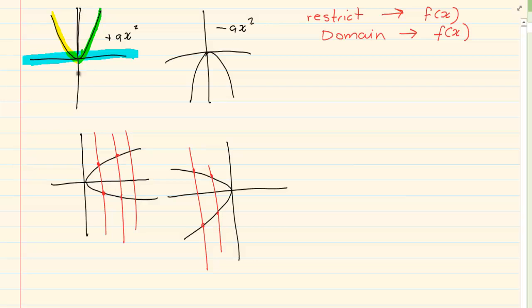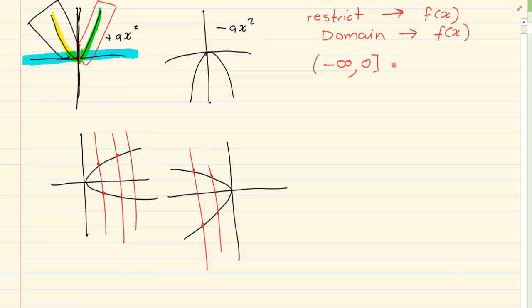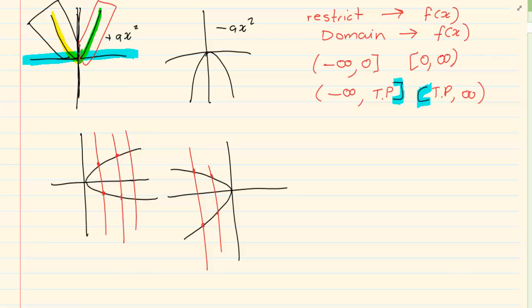How are we going to restrict it? We are basically going to draw half the graph — either this specific piece or this specific piece. Our restriction is exactly on the turning point. So we are going to go from negative infinity to 0, remembering that we include 0 so it gets a square bracket. Or we go from 0 to infinity. The safest way is to remember: negative infinity to the turning point, or from the turning point to infinity. Turning points are included so they get square brackets, whereas infinity is always excluded so it gets a round bracket.